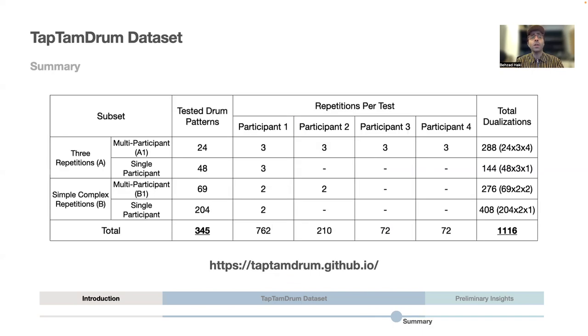The final collected data set consists of 72 unique drum loops, each dualized three times randomly, and 273 drum loops dualized in two versions, simple and complex. You can explore the data set further in the website linked here.